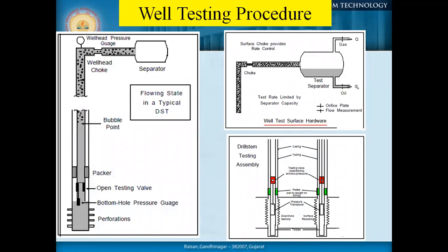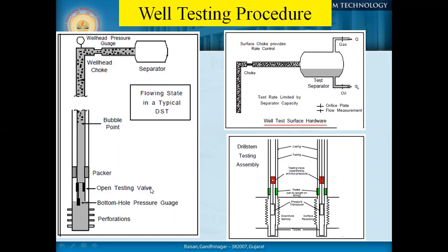Looking at the figure — particularly the left side and right side download figures — you can see the bottom-hole pressure gauge on the left side and also on the right side. We need to lower our instrument to the desired depth, which is above the perforation depth. Try to understand and visualize what we do, right from the surface to subsurface, and how far we must send out our instruments.